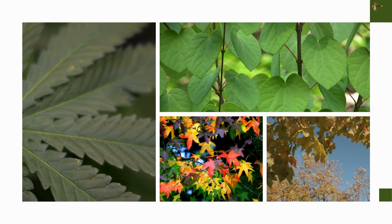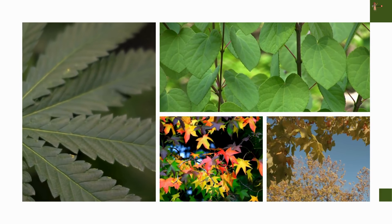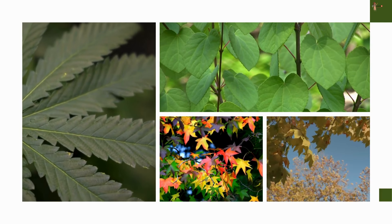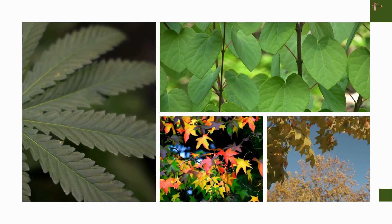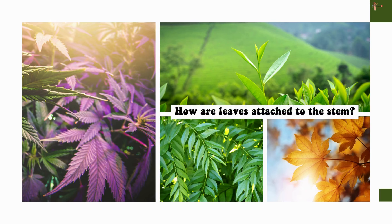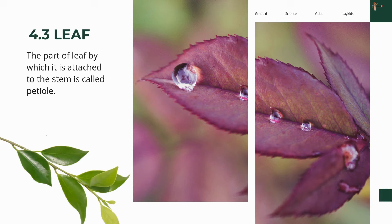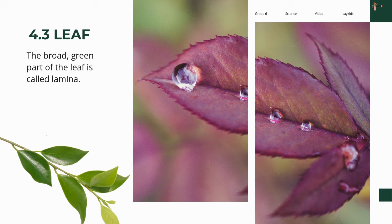Leaf. Have you ever observed the leaves of some plants around you? Are all the leaves of the same size, shape, and color? No, right? How are leaves attached to the stem? The part of a leaf by which it is attached to the stem is called the petiole. The broad, green part of the leaf is called the lamina. Try and identify these parts — petiole and lamina — in plants around you.